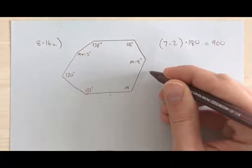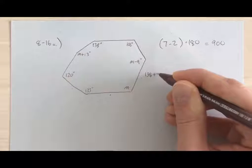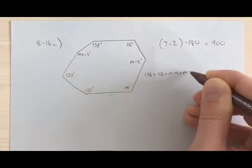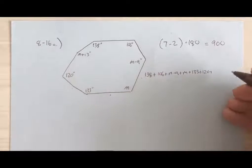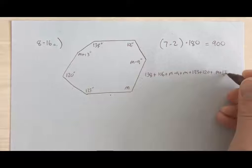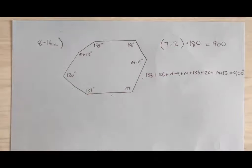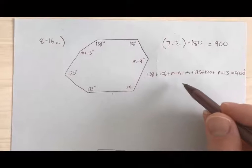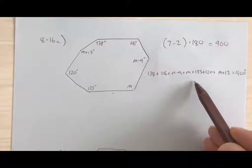So I'm going to go ahead and set up an equation where I take every single one of these angles: 138 plus 106 plus M minus 9 plus M plus 133 plus 120 plus M plus 13 equals 900 degrees. I think I got all of those angles. Now I'm going to simplify it a little bit by adding all like terms.